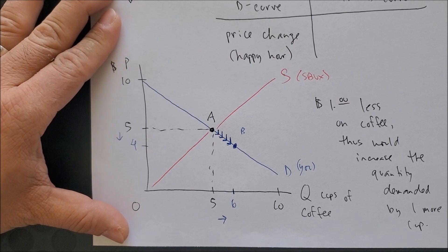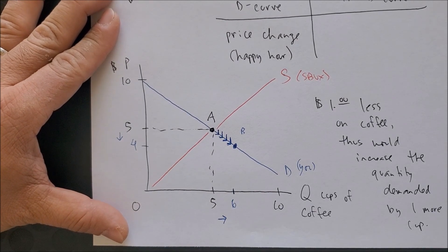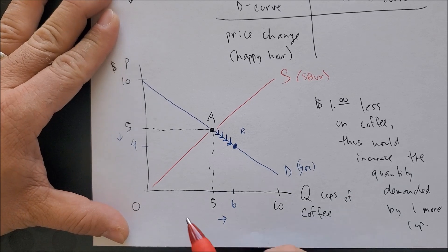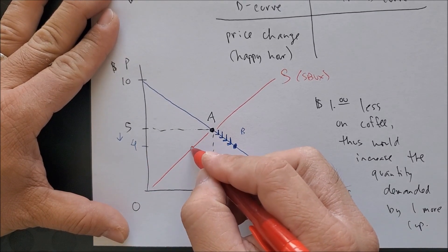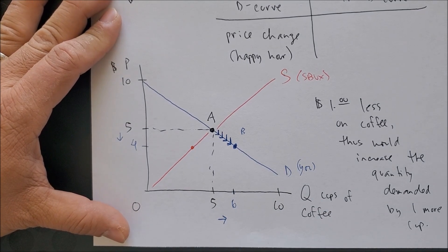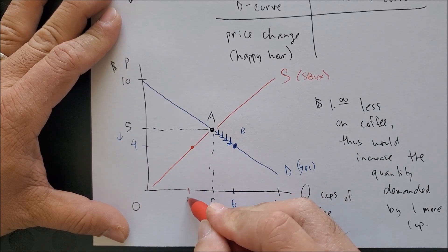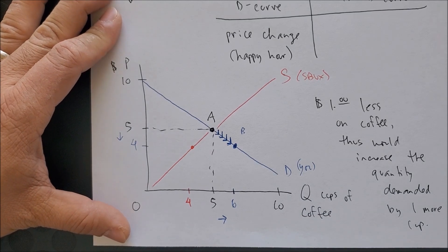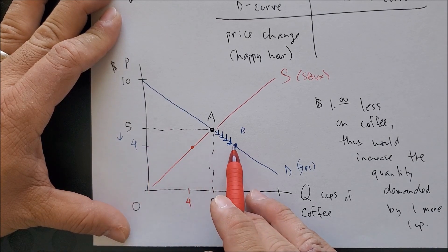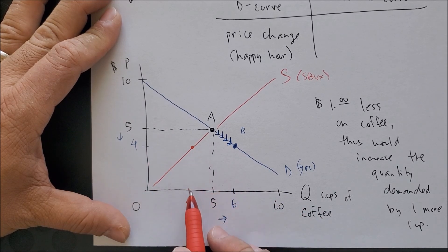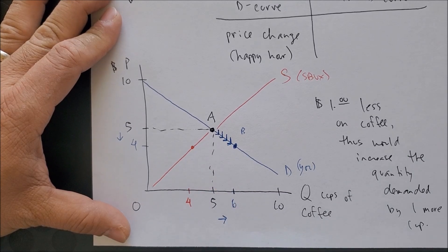From the producer's perspective, if producers decrease price by one dollar due to happy hour, they are not interested in making more coffee at a lower price. Starbucks will produce less — that's the law of supply: when producers see the price of their good decrease, they decrease the quantity produced. So you the consumer want more, but producers at one dollar less will produce less.